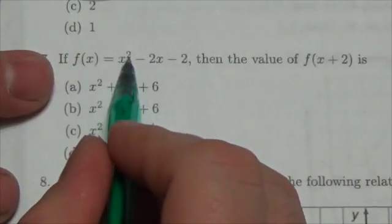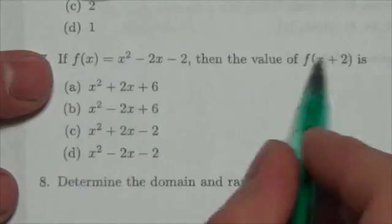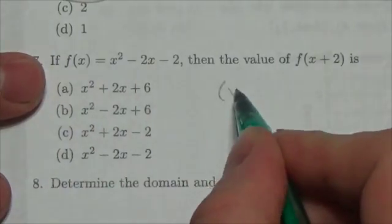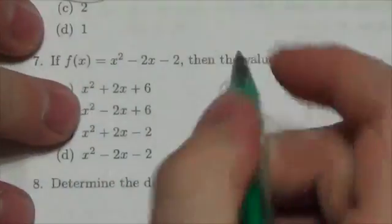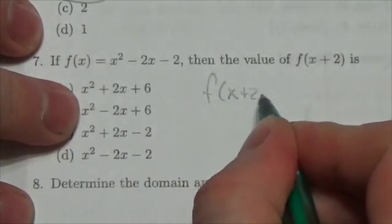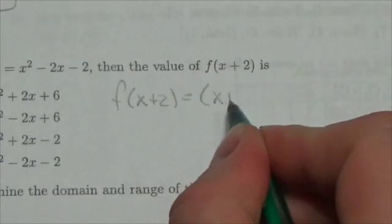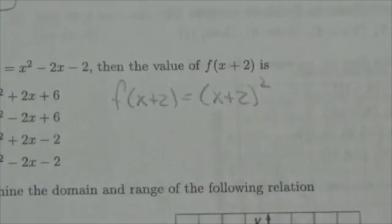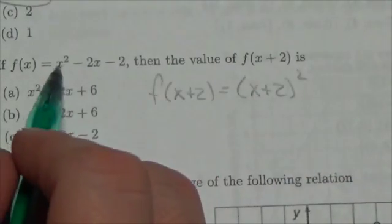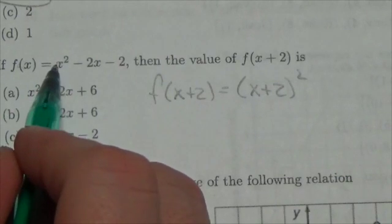So instead of independent variable squared being just x squared, now it's going to be - actually I'll write it out like this. This is going to be f of x plus 2 equals x plus 2 squared. That's what's going on here. Whatever's inside here is being squared.